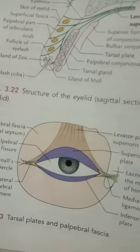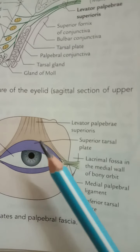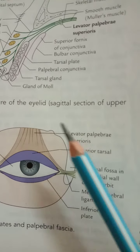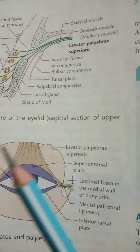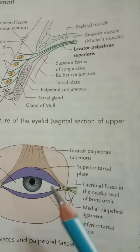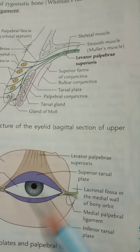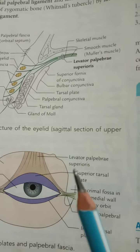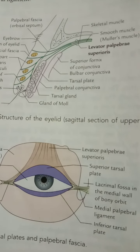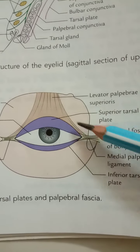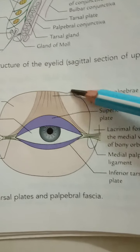There is an upper tarsus plate and a lower tarsus plate. The upper tarsus plate is attached to the palpebral ligament. The tarsus is a thin plate of condensed fibrous tissue. The upper tarsus plate is also attached to the levator palpebrae superioris muscle.